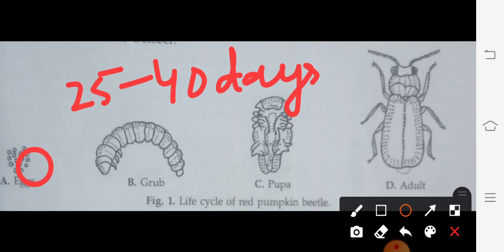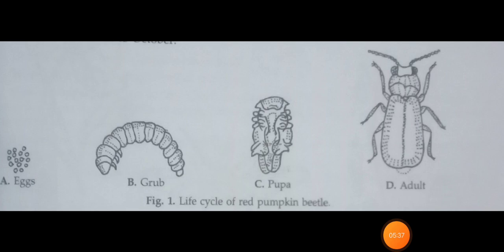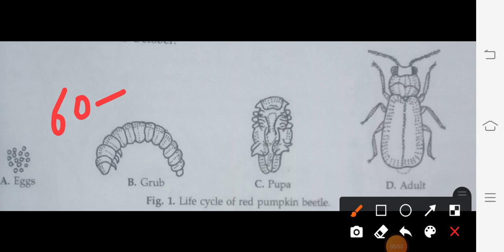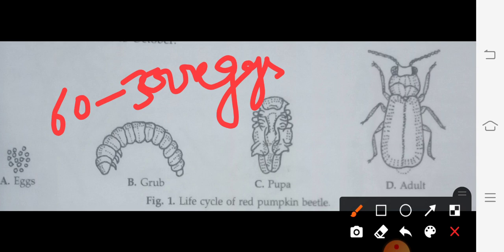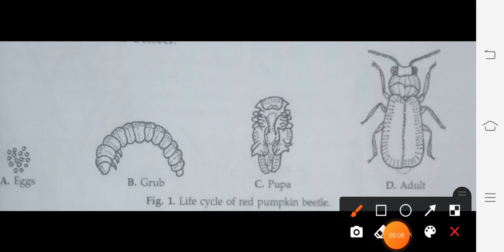First of all, we will discuss about eggs. These are eggs. The female lays eggs either in clusters or single near the roots of vegetables. How many eggs? 60 to 300 eggs.